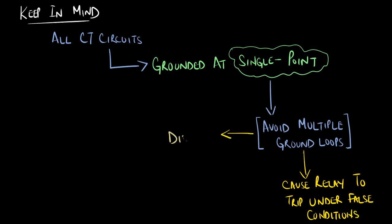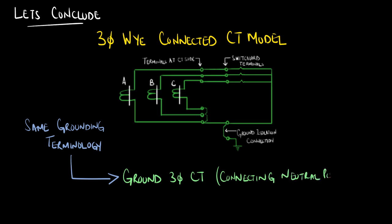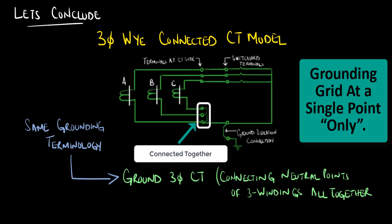We will be discussing this concept in more detail in a later series. We will now sum up the discussion by drawing a three-phase Y connected current transformer model. Following the same grounding terminology, we ground a three-phase CT model by connecting the neutral points of the three windings together, which is followed by connecting them to the grounding grid at a single point only.